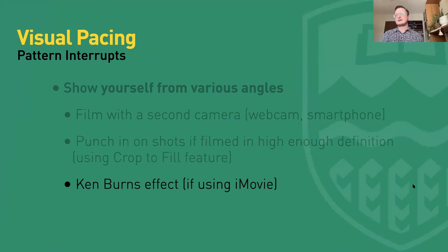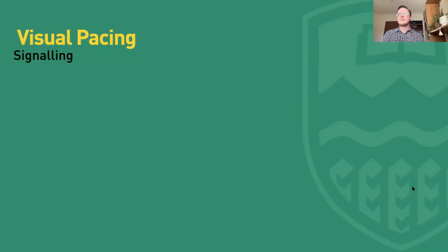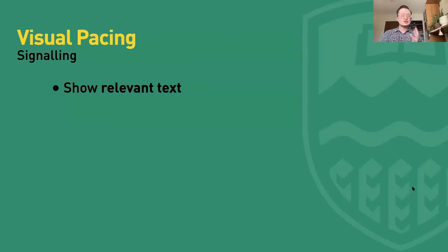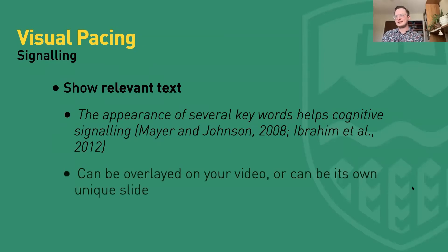So those are our different pattern interrupts — you can show yourself, show yourself from a different angle. Now let's talk about the other category of varying visual pacing: signaling and cueing. The first way to use signaling is to show relevant text — a few keywords of whatever you're speaking about — which helps with cognitive signaling. You have the option to overlay this directly on your video or make it its own unique slide.